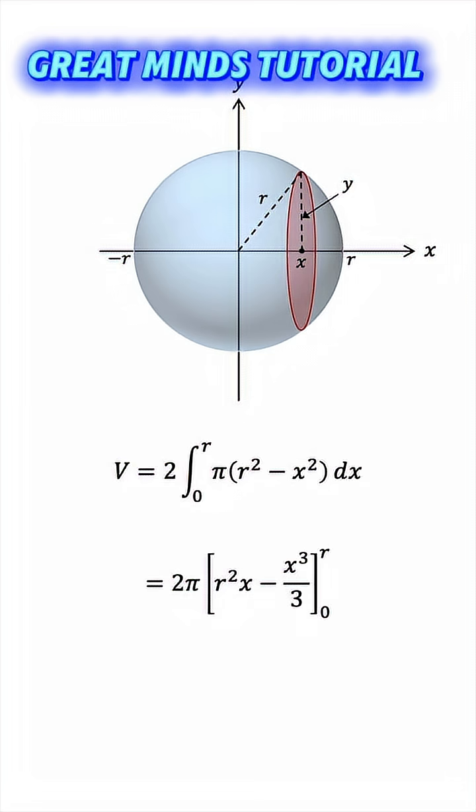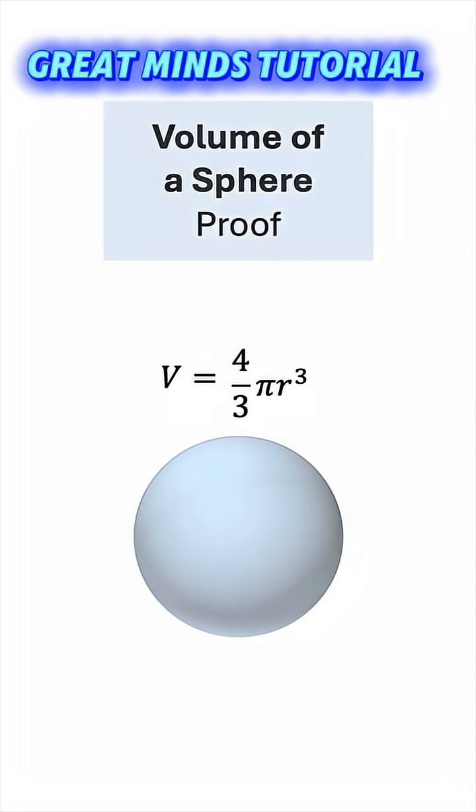The lower bound is 0, so all we have to do is plug in r into the antiderivative, giving us r cubed minus r cubed over 3, which is 2r cubed over 3, which gives us 4 over 3 pi r cubed. So there you have it.